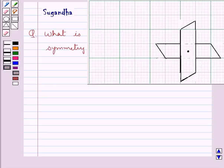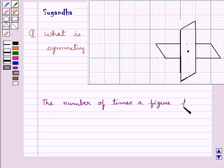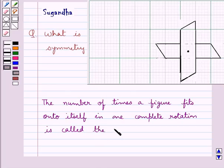First, let's define the order of rotational symmetry. The number of times a figure fits onto itself in one complete rotation is called the order of rotational symmetry.